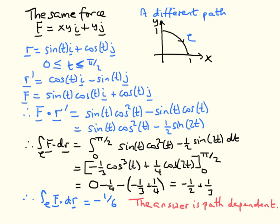On this slide, we have exactly the same vector field F but take a different path. We want to parameterise an arc of a circle going from the same start to the same end. Let our position vector be sin(T)·i + cos(T)·j. When T=0, there is no x-component; we are on the y-axis with y=1. As T increases, x increases and y decreases. When T=π/2, the y-component is 0 and the x-component is 1. So this is our parameterisation of the path.